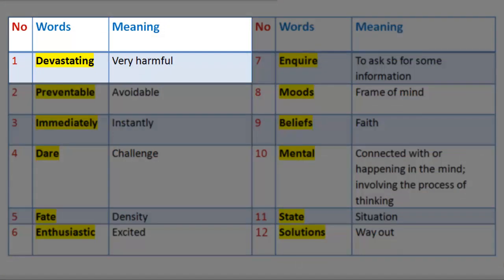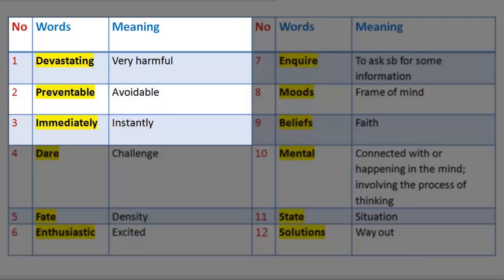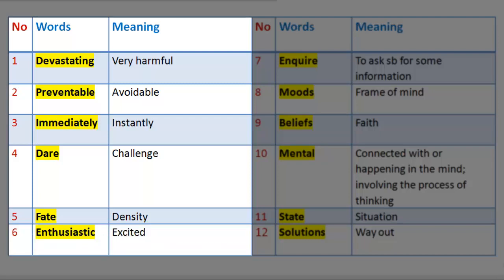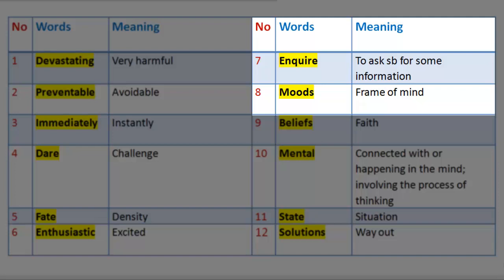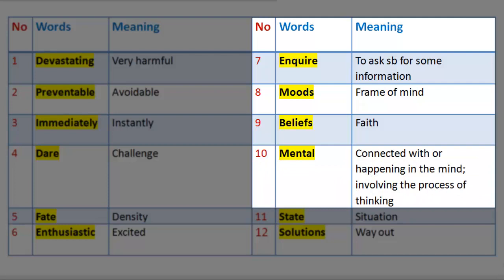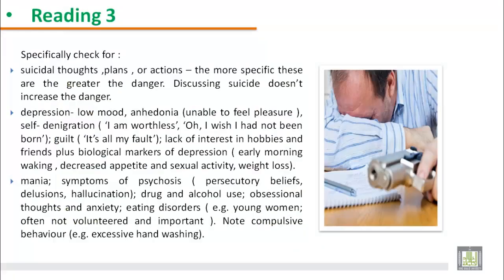Vocabulary 2. Devastating: very harmful. Preventable: avoidable. Immediately: instantly. Dare: challenge. Fate: destiny. Enthusiastic: excited. Inquire: to ask somebody for some information. Moods: frame of mind. Beliefs: faith. Mental: connected with or happening in the mind, involving the process of thinking. State: situation. Solutions: way out. Feelings: faith.